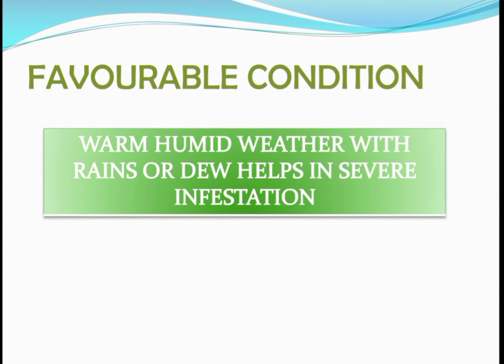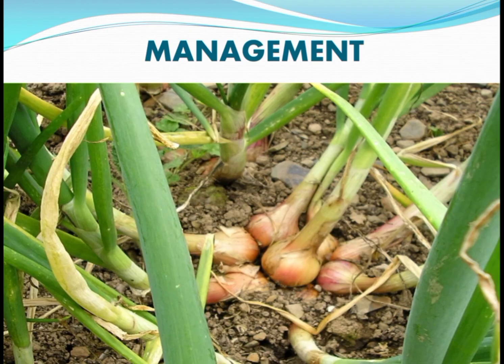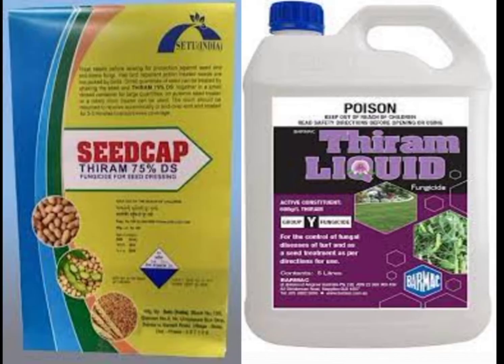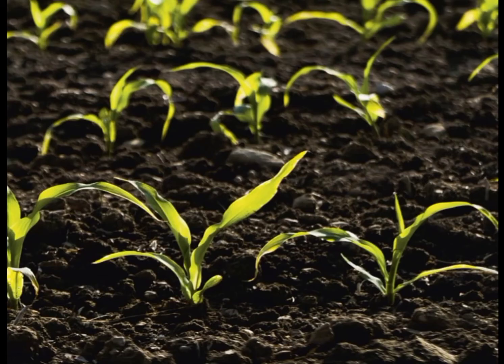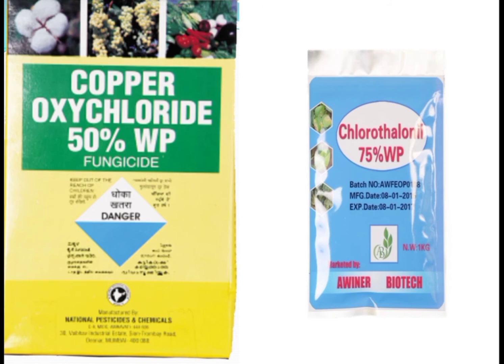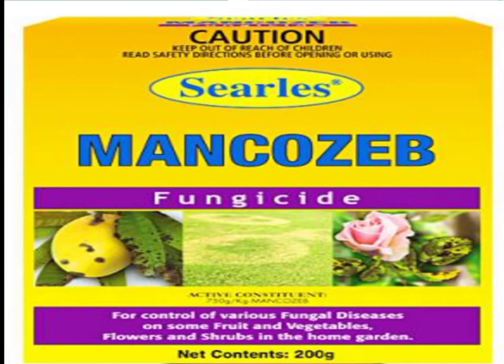Favorable Conditions: Warm, humid weather with rains or dew helps in severe infestation. Management: Disease-free bulbs should be selected for planting, and the seeds should be treated with thiram at the rate of 4g per kg. The field should be well-drained. Three foliar sprays with copper oxychloride 0.25% or chlorothalonil 0.2% or mancozeb 0.2% is helpful.